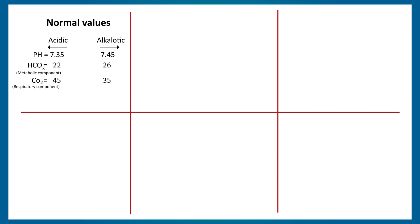CO2 represents the respiratory component. Its normal value is in the range of 35 to 45. CO2 is acidic itself, so if its value increases above 45 it would be acidic, and if its value falls below 35 it would be alkalotic.